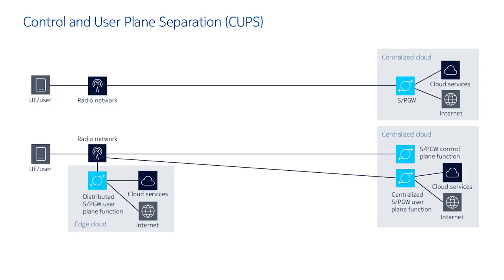With CUPS we are splitting control and user plane. The control plane we keep in the centralized data center, and although we can keep the user plane in the centralized data center too, it is a better idea to move it to distributed data centers closer to the radio network, closer to the end user. This user plane function in the distributed data center has access to the internet so it can do local breakout to the internet and can also give access to local cloud services. Policy servers and charging servers remain in the centralized data center.